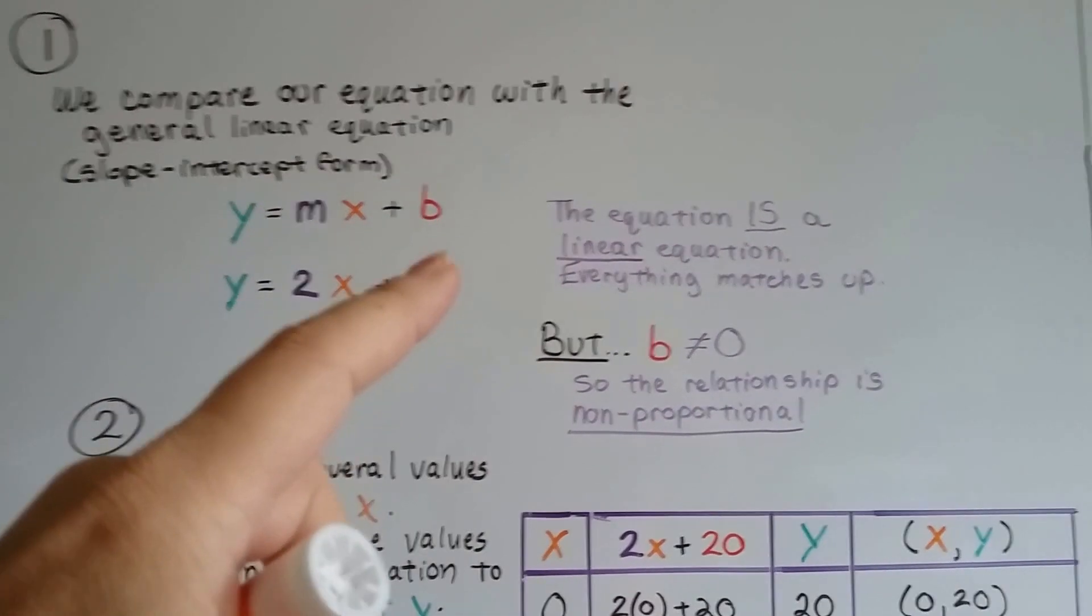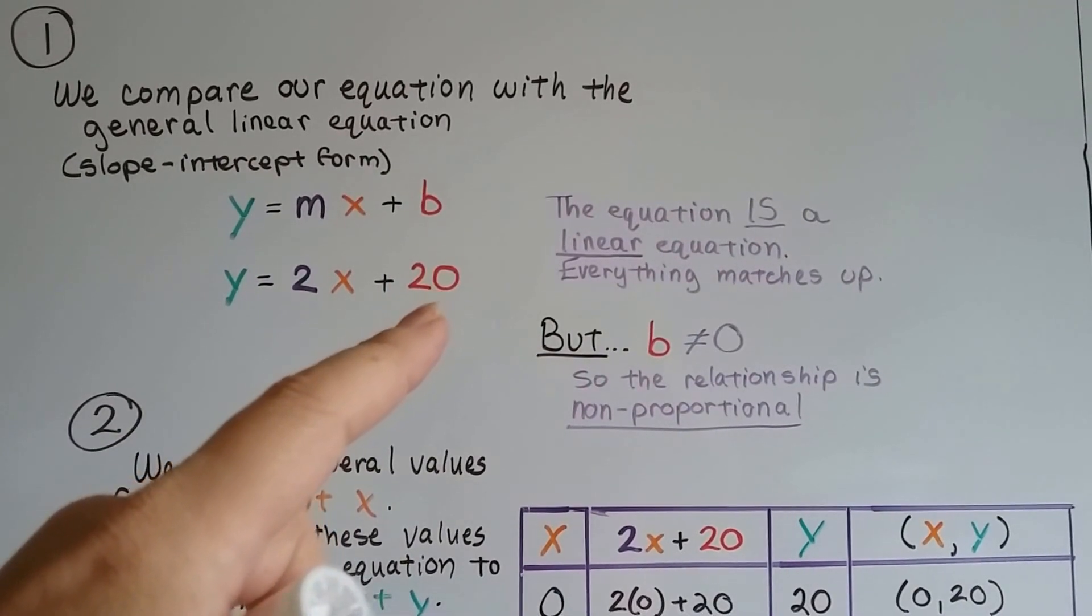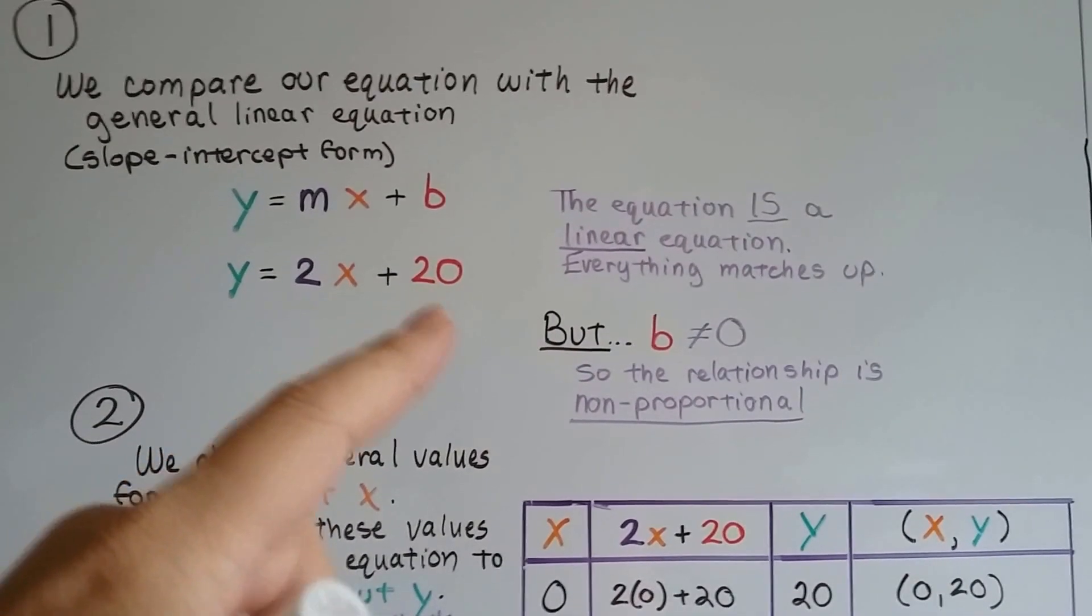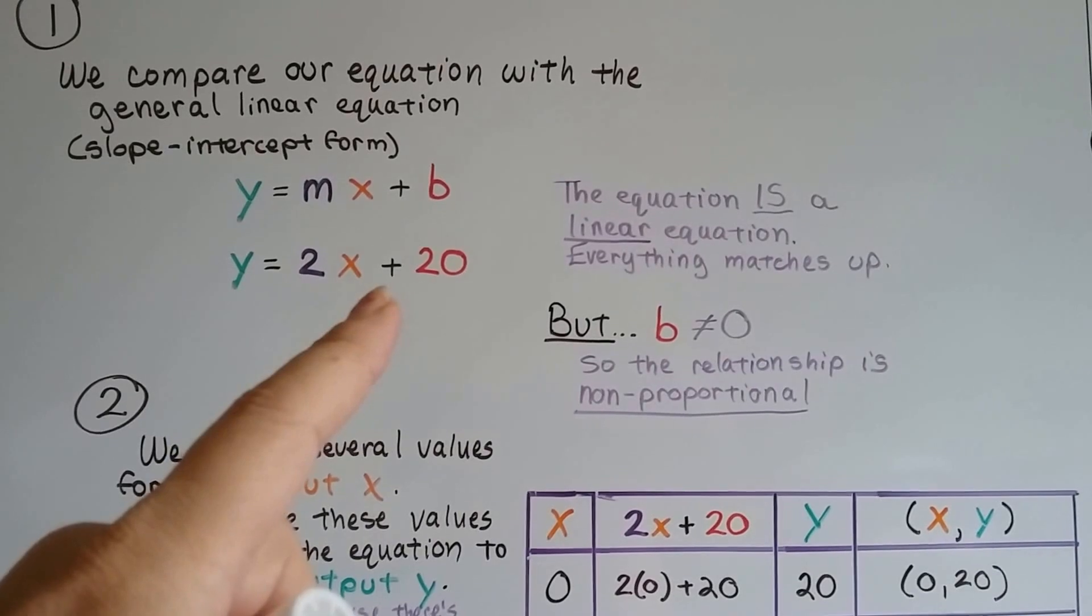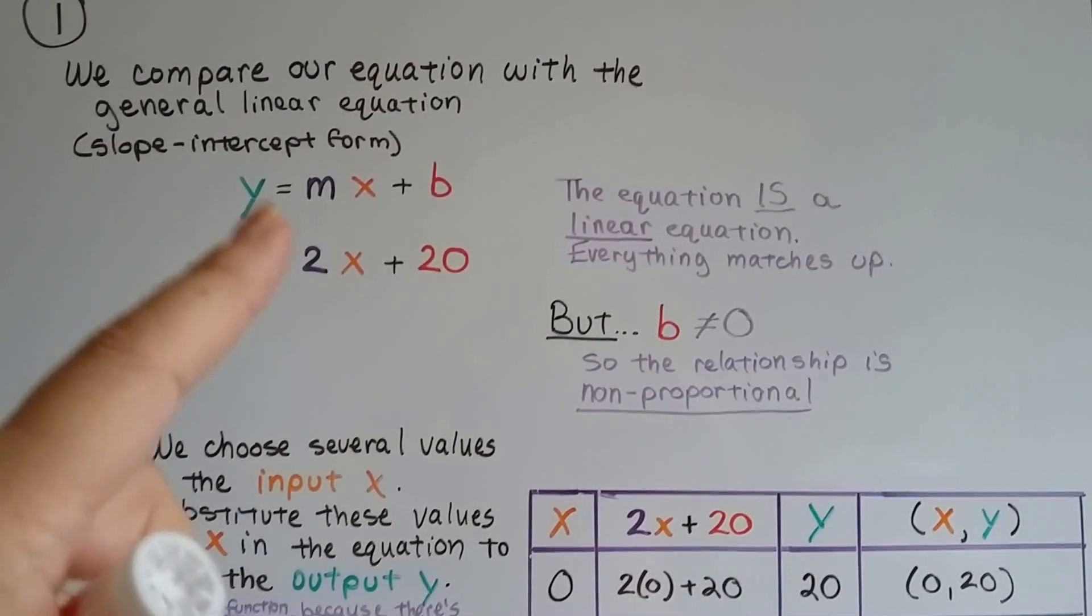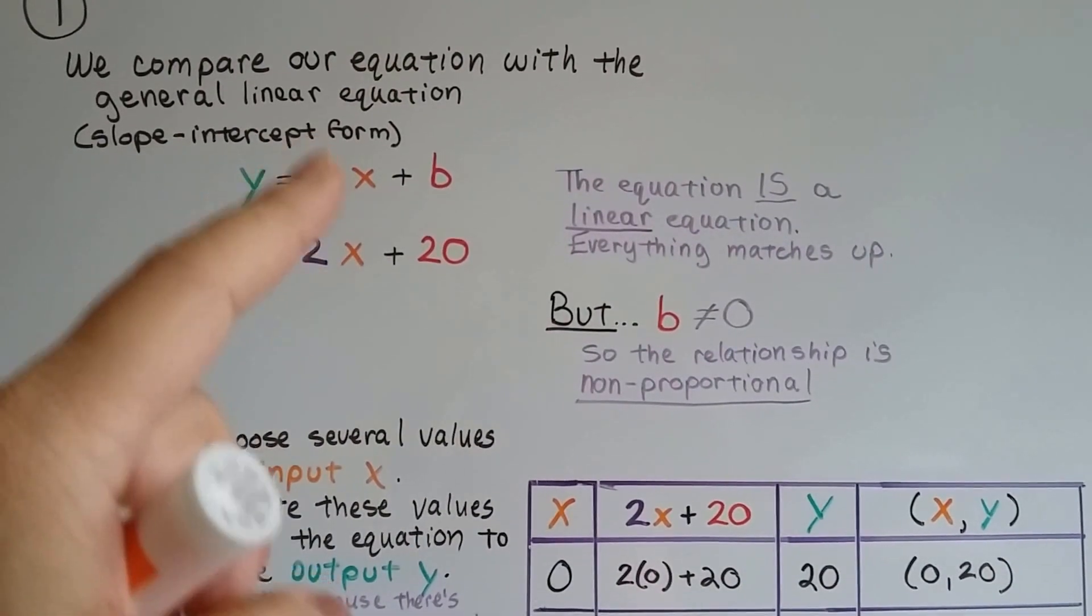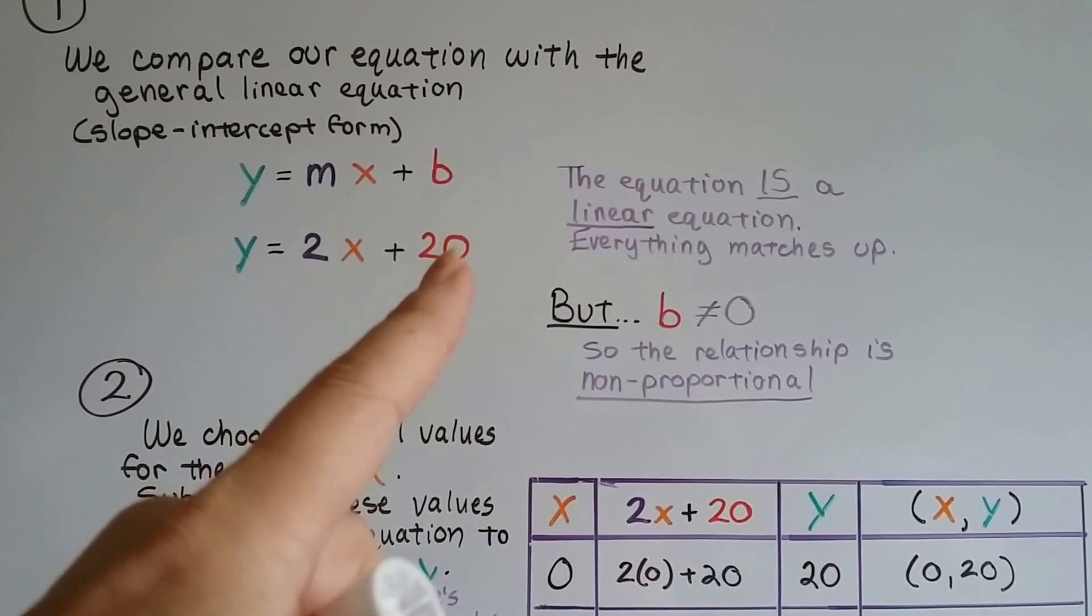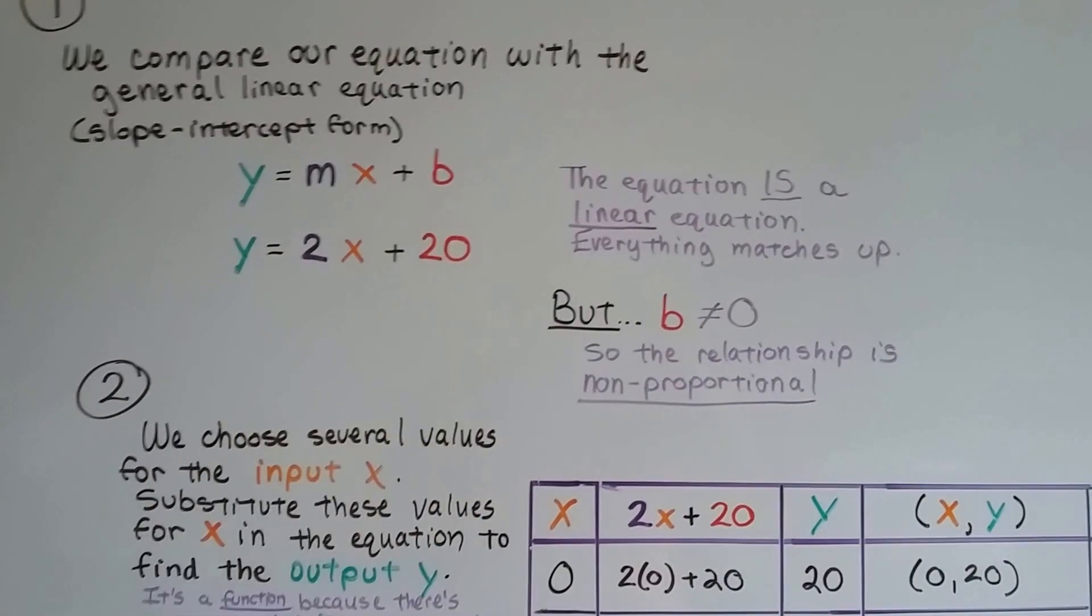But this B is not a 0. It's a 20. So, because it doesn't equal 0, this relationship is non-proportional. We can just see from an equation that it's linear because it matches the form of a linear equation. And we can see it's non-proportional because the y-intercept B is not a 0.